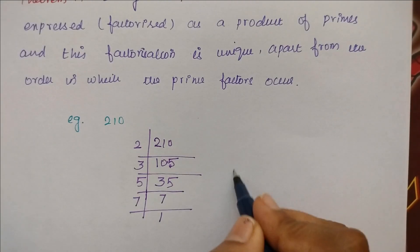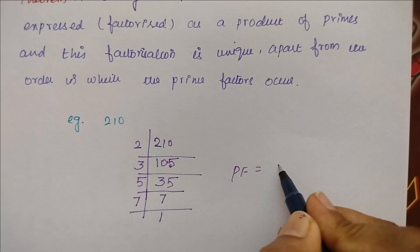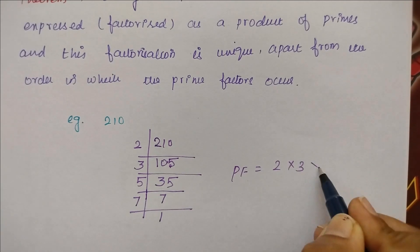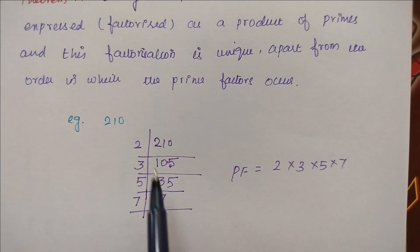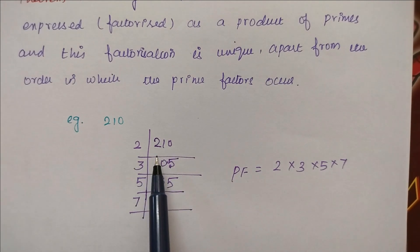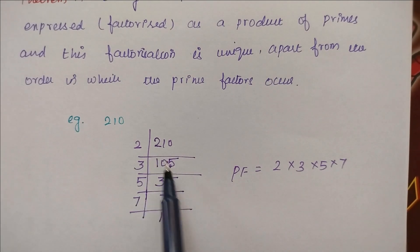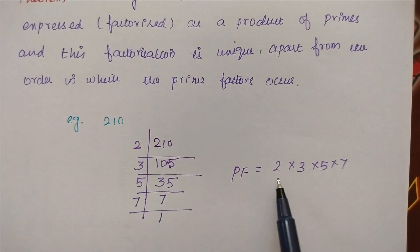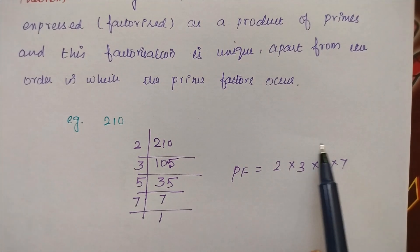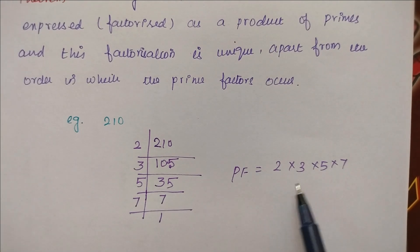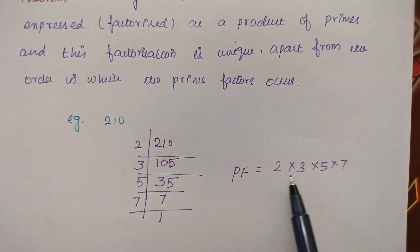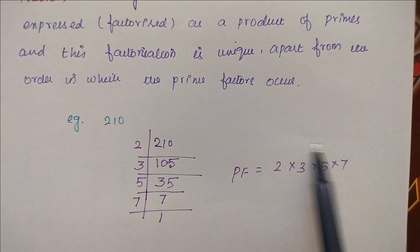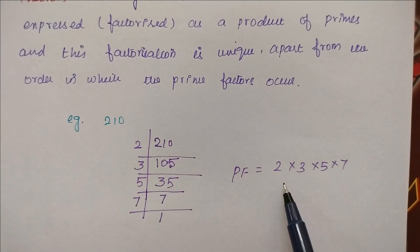So now the prime factors we have found: 2 times 3 times 5 times 7. So 210 is the composite number. This number can be expressed as a product of prime factors — all of these are prime numbers. So this composite number can be written as a product of primes.